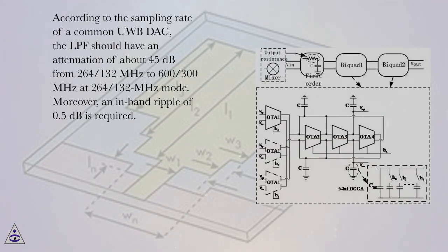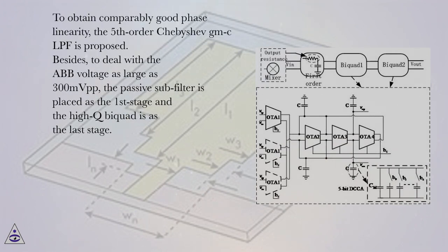Moreover, an in-band ripple of 0.5 dB is required. To obtain comparably good phase linearity, the fifth-order Chebyshev gm-C LPF is proposed.